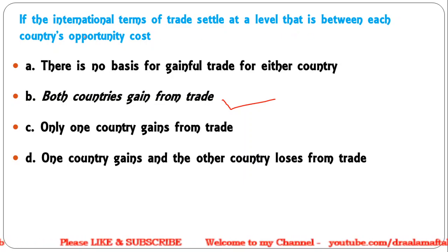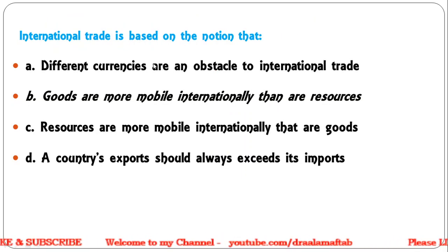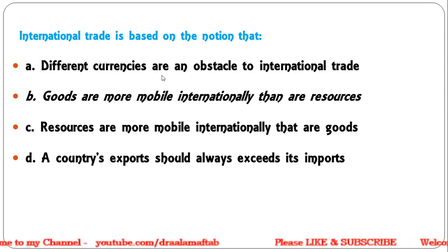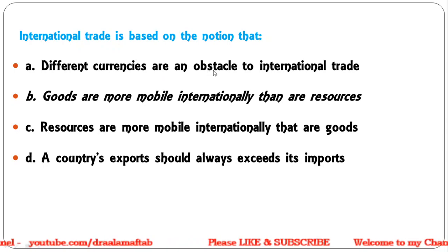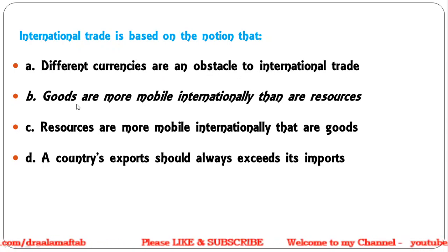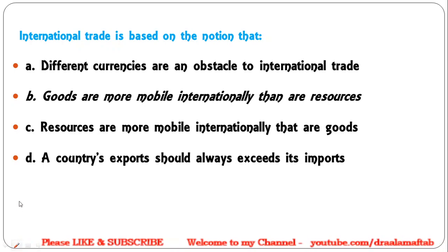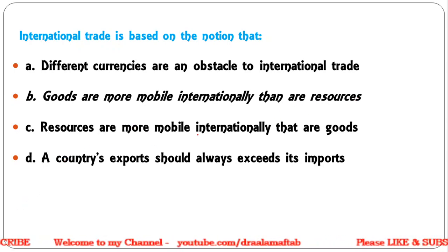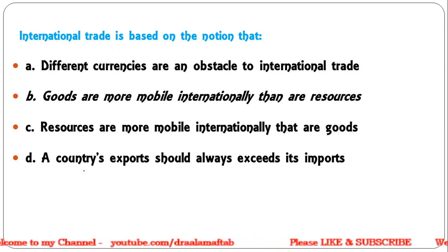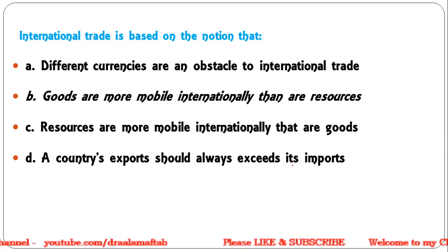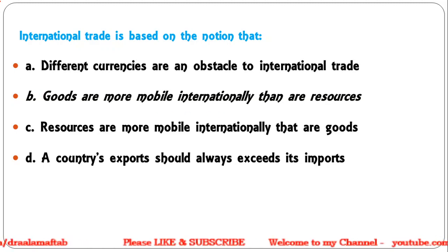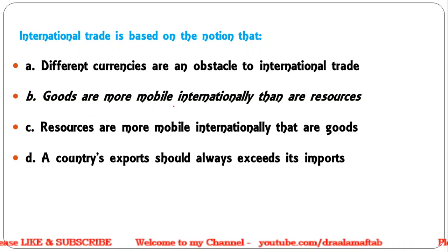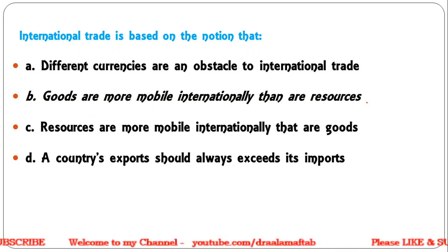Next question: International trade is based on the notion that — different currencies are an obstacle to international trade; goods are more mobile internationally than resources; resources are more mobile internationally than goods; a country's exports should always exceed its imports. Correct answer: international trade is based on the notion that goods are more mobile internationally than resources, as most resources are bulky and less mobile.